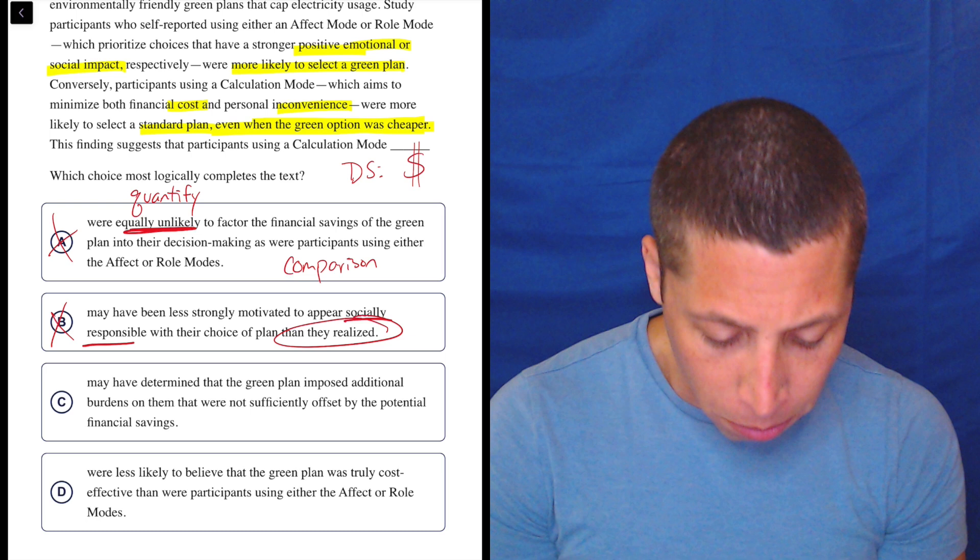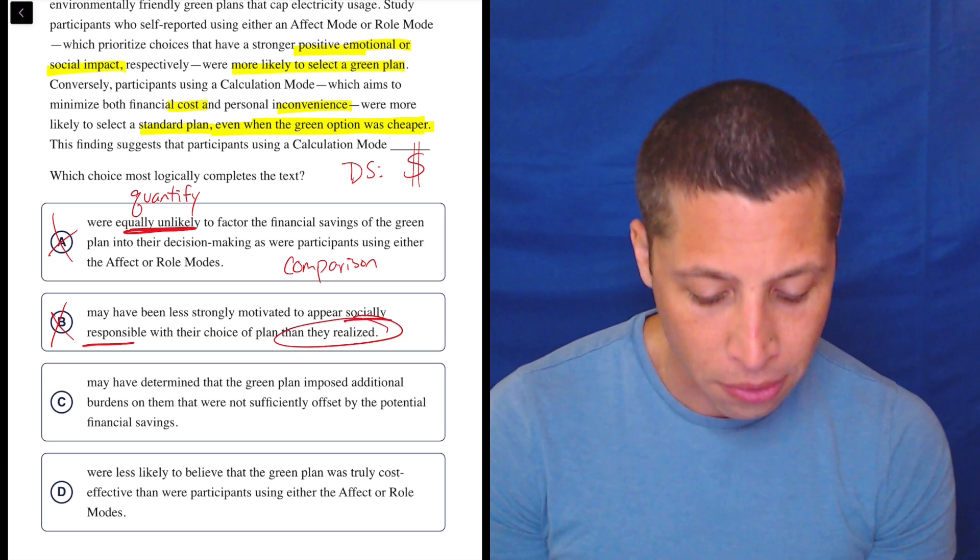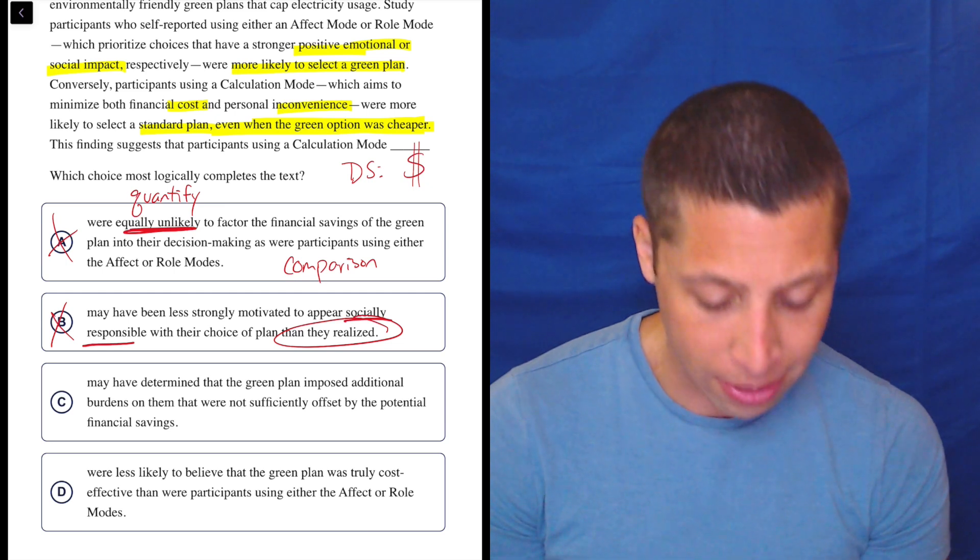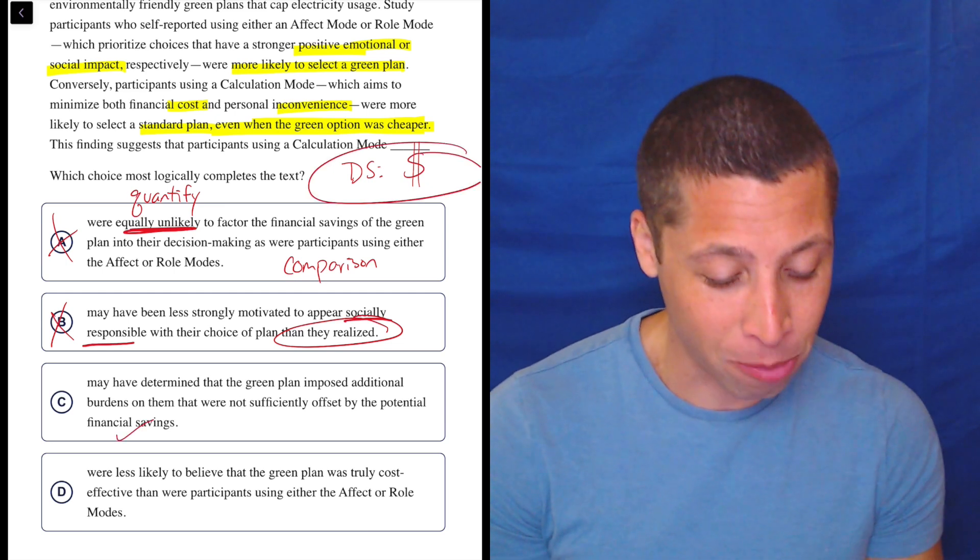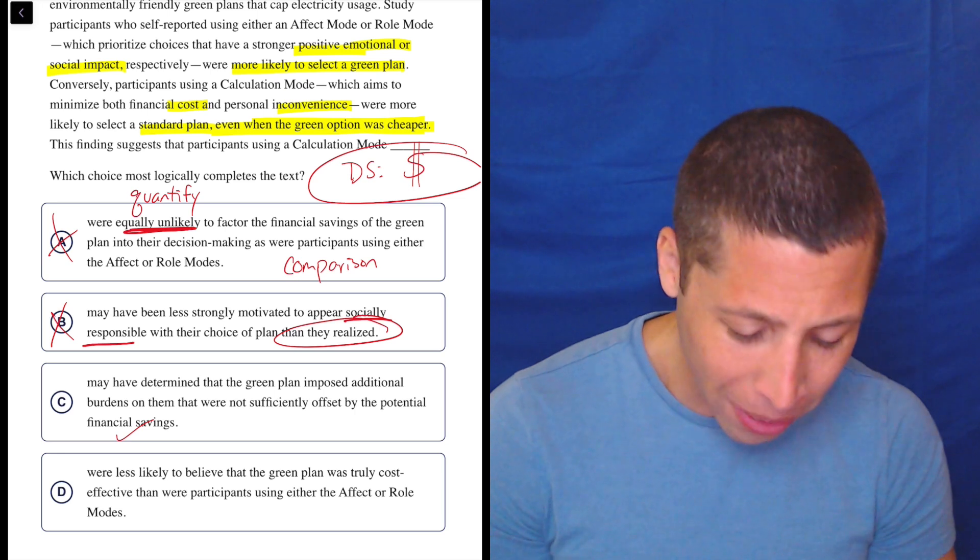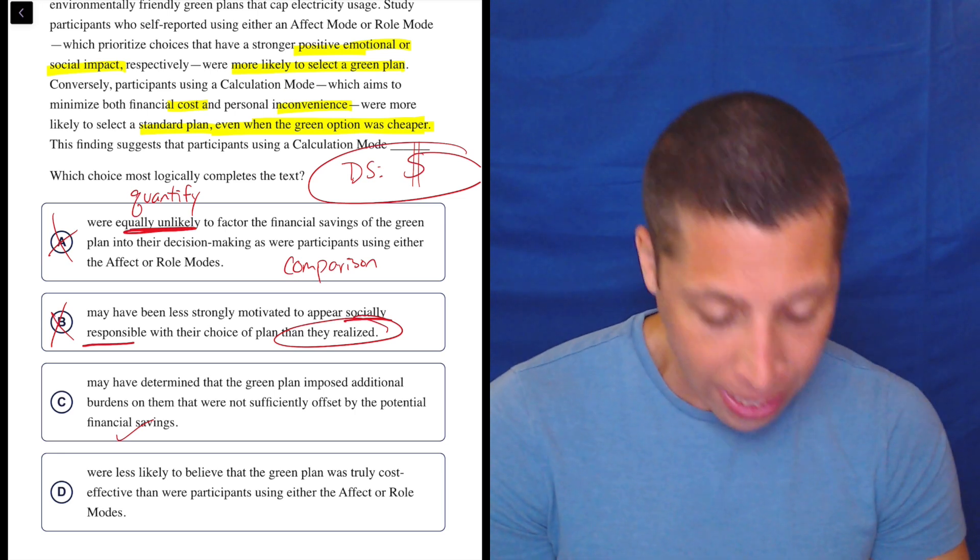C, they may have determined that the green plan imposed additional burdens on them that were not sufficiently offset by the potential financial savings. I like that it says financial savings. That kind of matches my dumb summary. So I can think about this more. Maybe I just go to D and see if that has anything to do with what's happening.